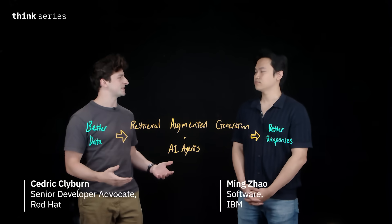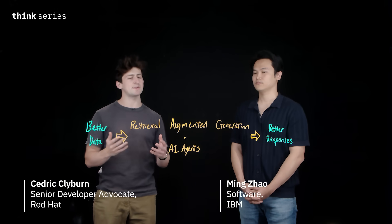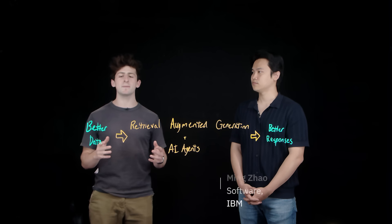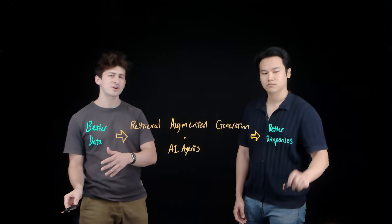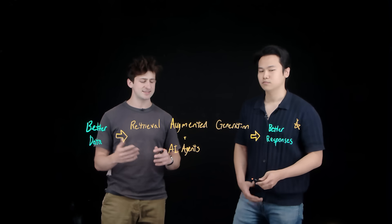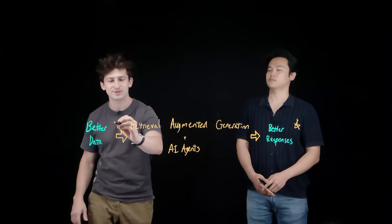Let's talk about one of the biggest missing pieces in retrieval augmented generation pipelines or AI agents, because it's all about data preparation. In order for your model to provide better and more accurate responses, it needs to fully understand the data that you're using.